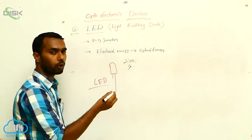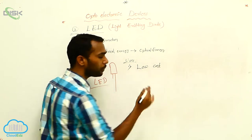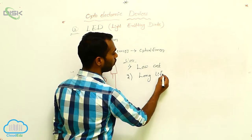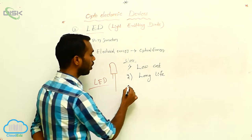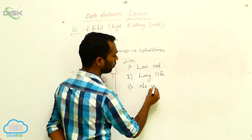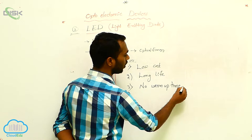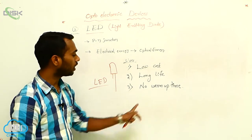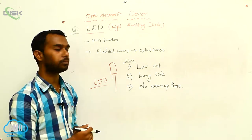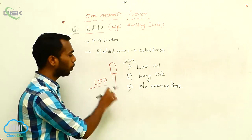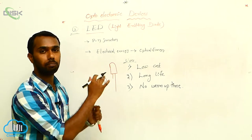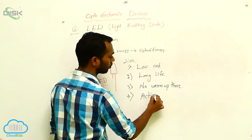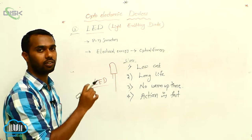First, it is low cost — cheap in cost, we get these LEDs with less amount. And they have a long life; we can use them for years and years. These are also having no warm-up time. If you take a focus light, that takes some time to give more intensity of light — that is warming. But here, warm-up time is not required. When you switch on, automatically it will glow within a fraction of seconds. Its action is very fast.